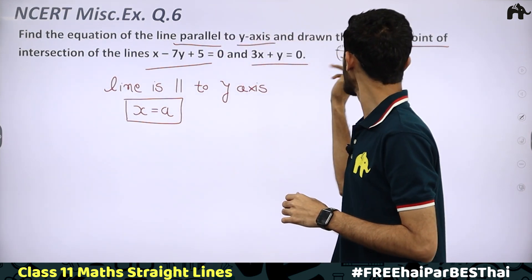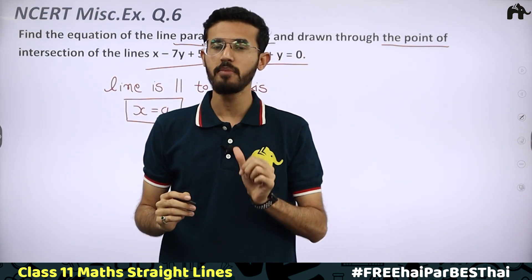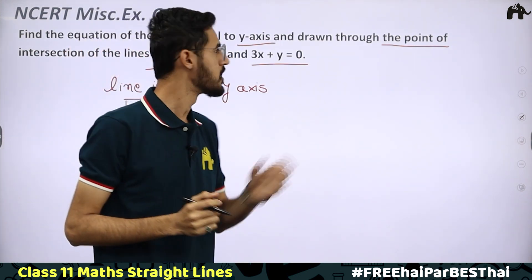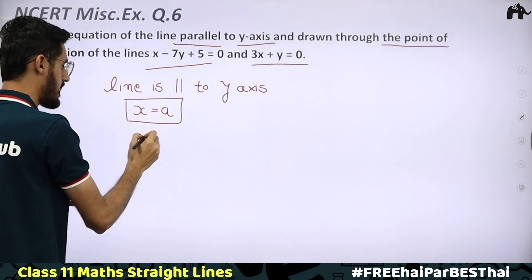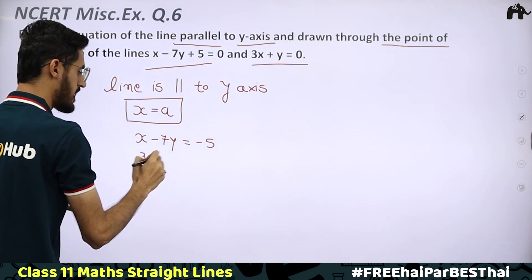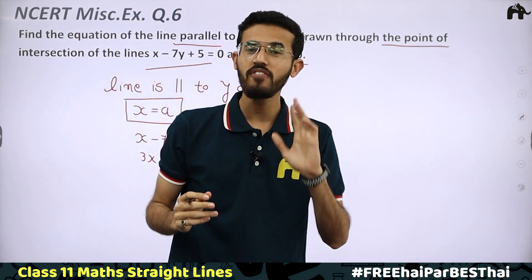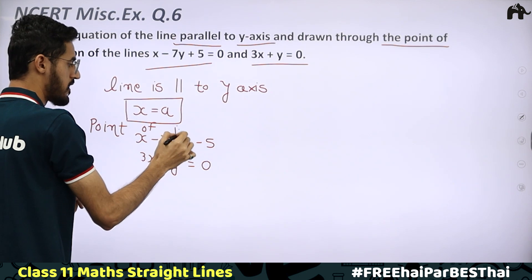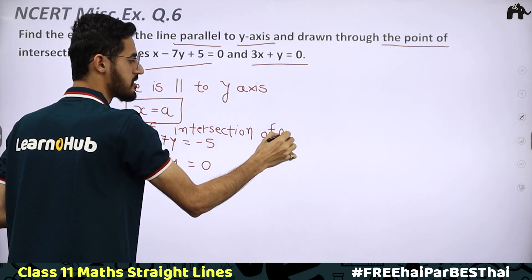Since the line is drawn through the point of intersection, we need to find that intersection point first. Our two lines are: x − 7y = −5 (equation 2) and 3x + y = 0 (equation 3). To find the point of intersection of these lines, we will solve them simultaneously.